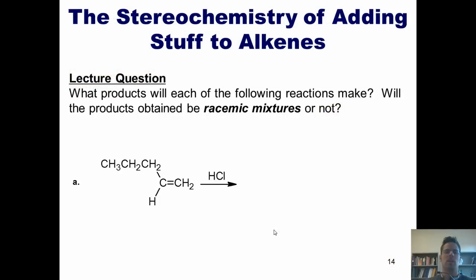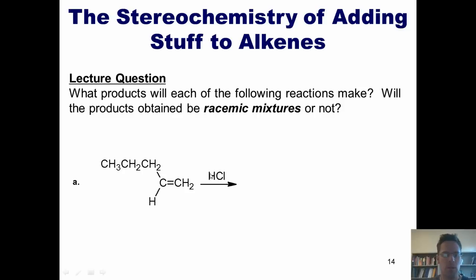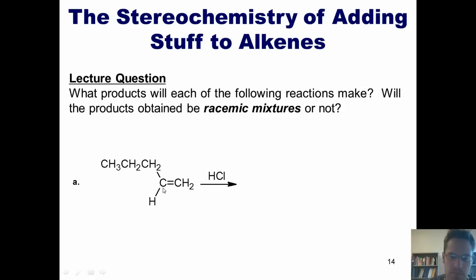With this as background, I want to throw a lecture question at you. What products will each of the following reactions make? Will the products obtained be racemic mixtures or not? I have 1-pentene being treated with HCl. The product would begin to be assembled by having the pi electrons come out and form a bond with the hydrogen, which goes on the less substituted external carbon, leaving a temporary secondary carbocation in the middle. The chloride then comes in and forms a bond with that internal carbon, giving me this product.